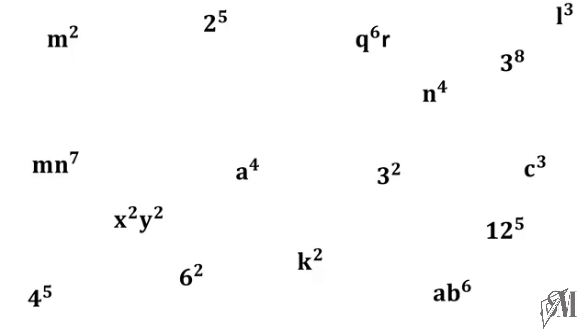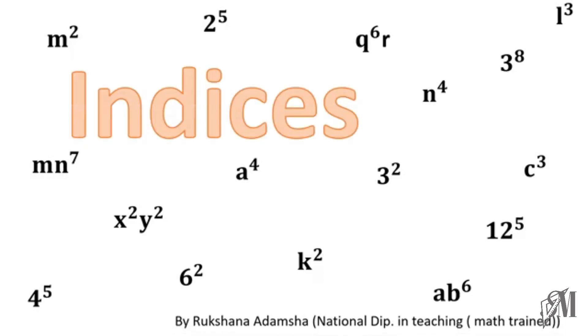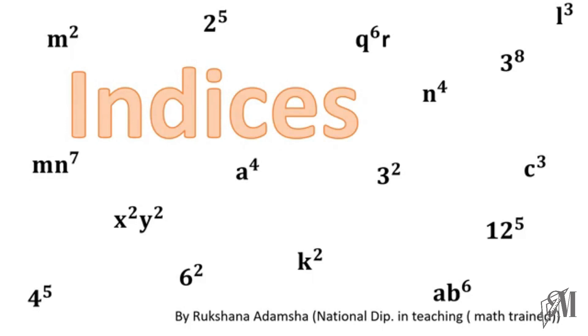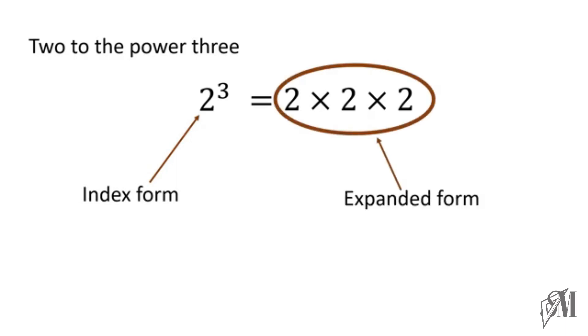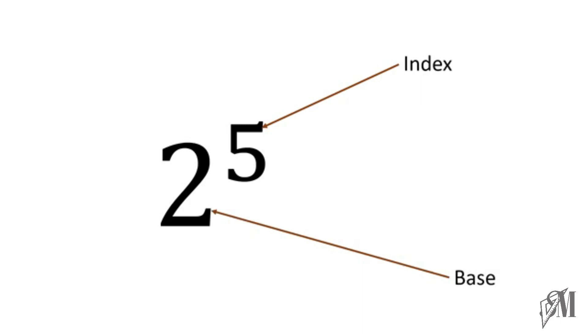Welcome to Smart Math Online Tutor. Through this video we are going to study about indices. This value is written in index notation, read as 2 to the power 3, and can be written as 2 into 2 into 2. 2 to the power 3 is called the index form, whereas 2 into 2 into 2 is called the expanded form. The value is 8. In an index form, for 2 to the power 5, 5 is called the index, 2 is called the base, and the whole thing together is called a power.